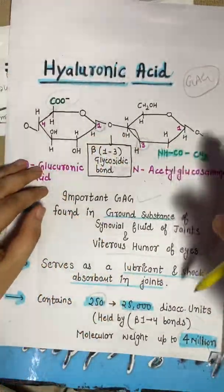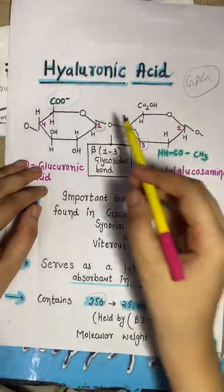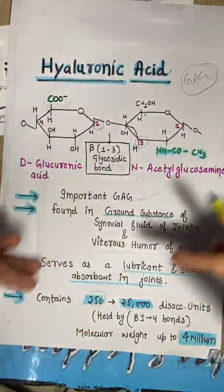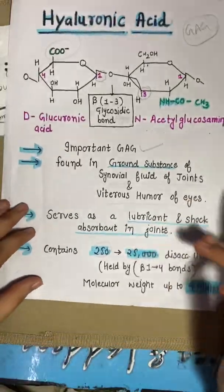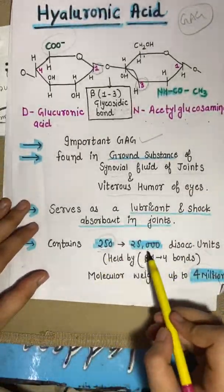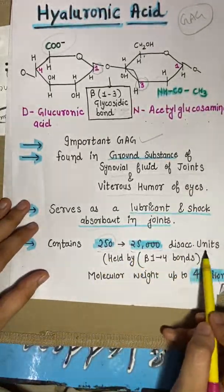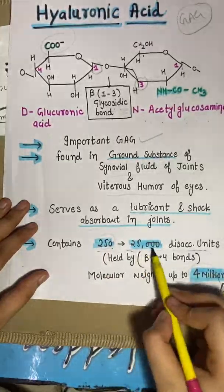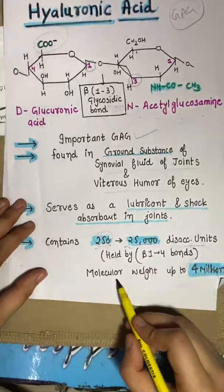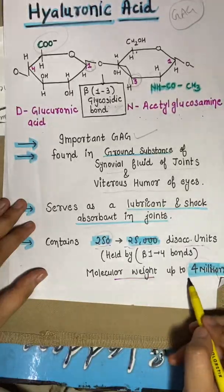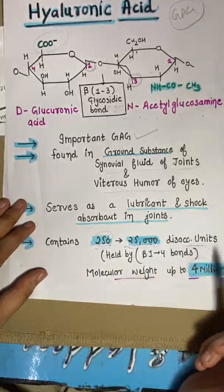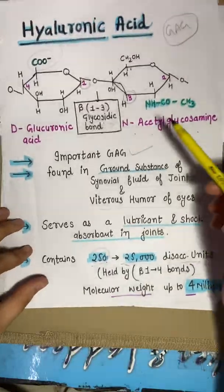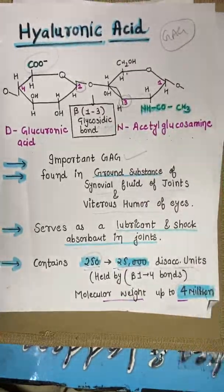This disaccharide unit repeats over and over — from 250 to 25,000 disaccharide units in total. The molecular weight is approximately 4 million. The bond between repeating units is a beta-1,4 glycosidic bond.